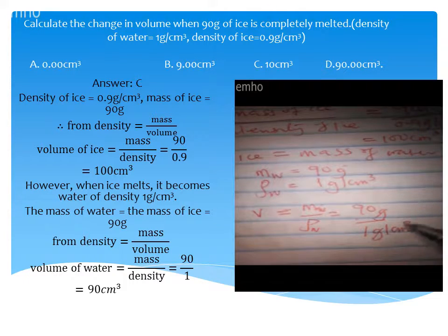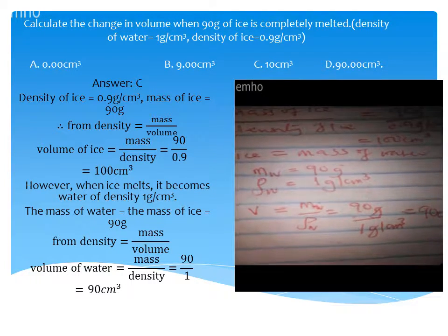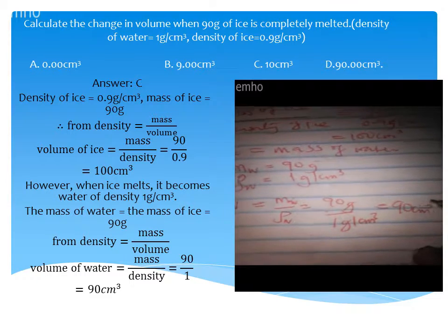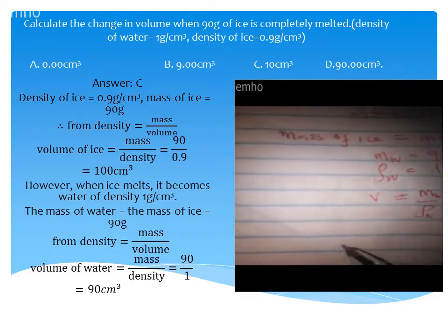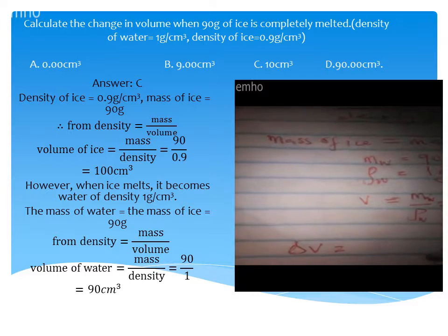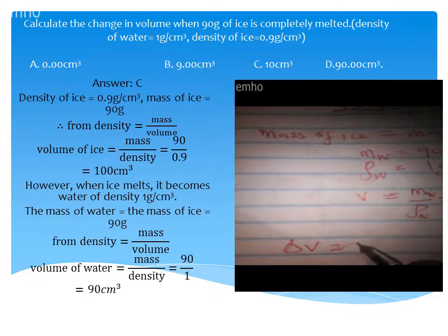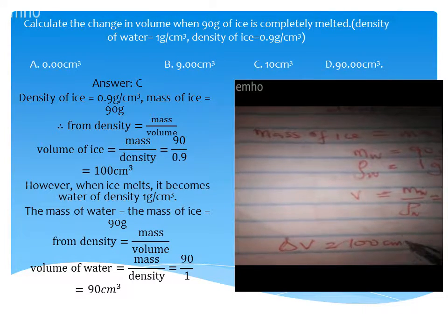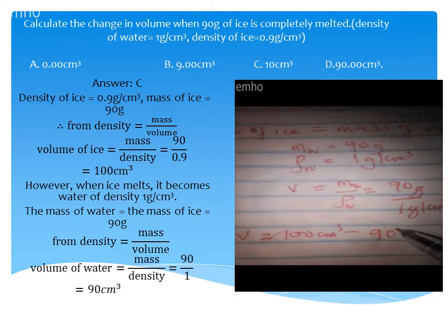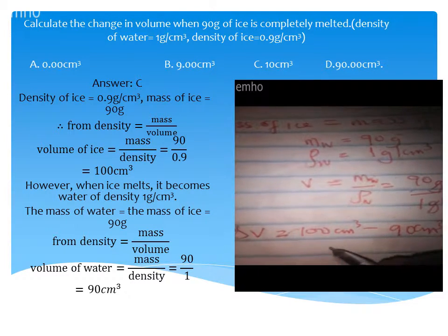The grams cancel out, giving us 90 cm³. So the change in volume will be equal to 100 cm³ minus 90 cm³, and that gives us 10 cm³.